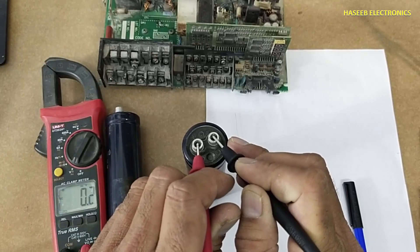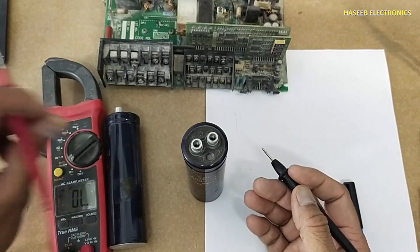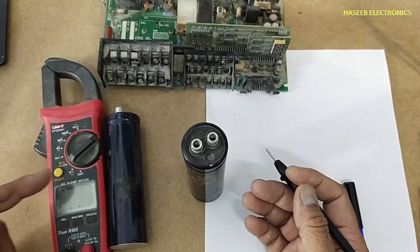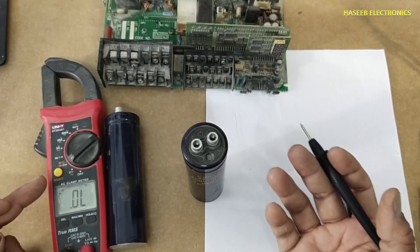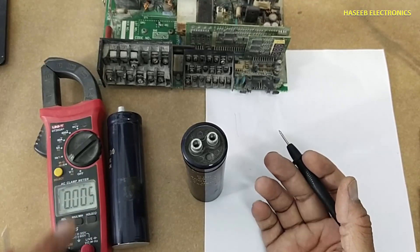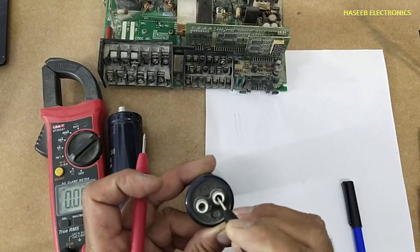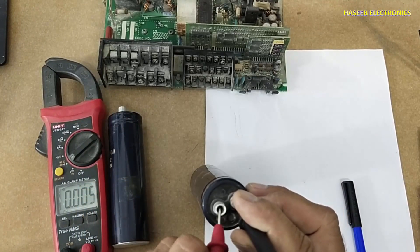Now it is 0.2 millivolt. Move to capacitance. If you don't have an ESR meter, then we can use a capacitance meter. Black lead at negative, red lead at positive.